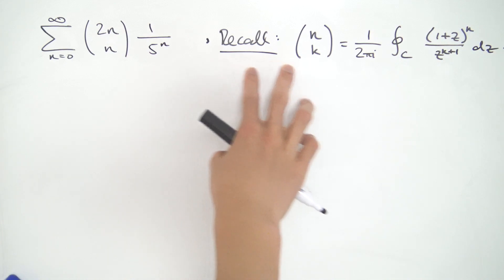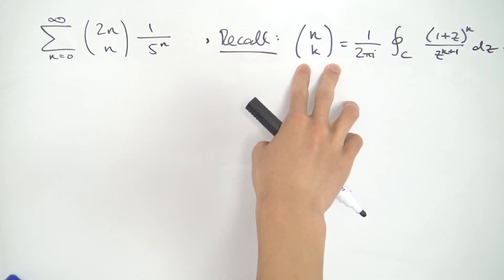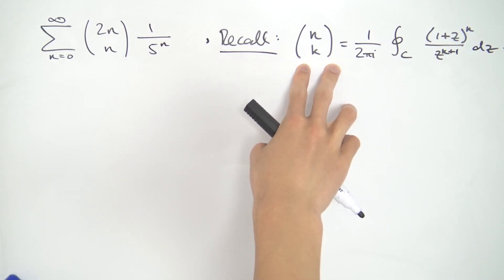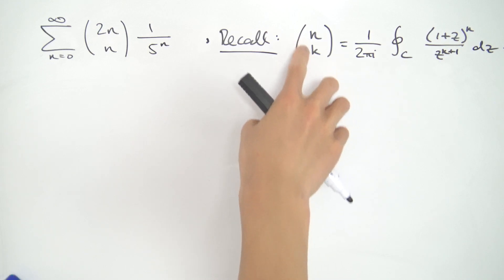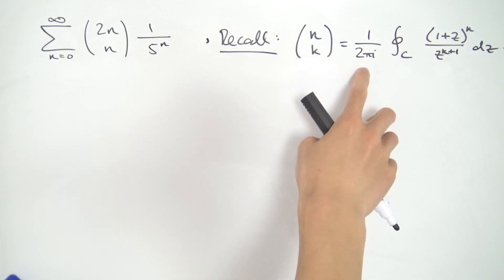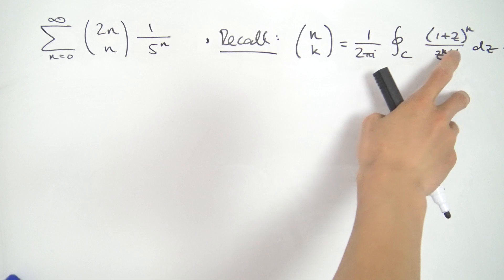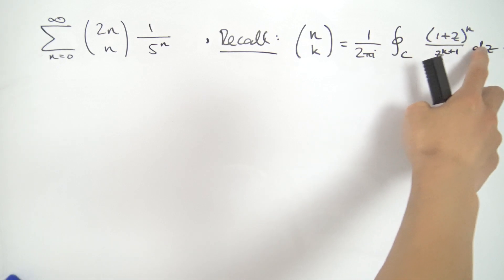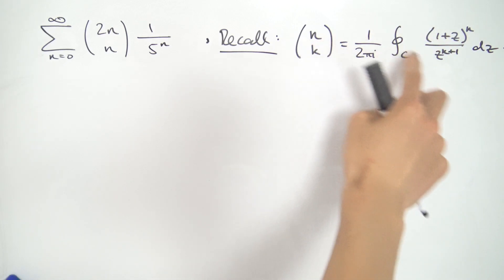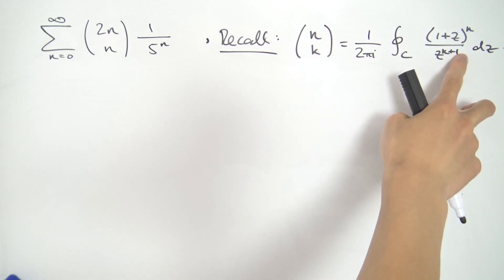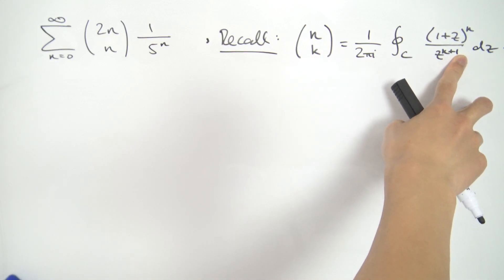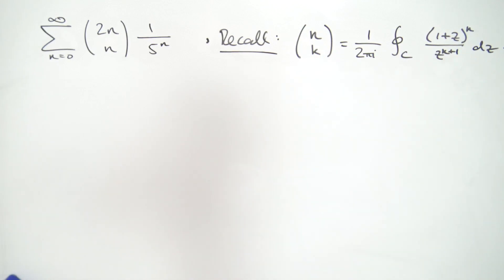In the previous video we derived this integral representation for the binomial coefficients. If we have n choose k, that's 1 over 2 pi i times the contour integral of 1 plus z raised to the top number, over z raised to the bottom number plus 1, dz. And that's exactly where we're going to start with this.